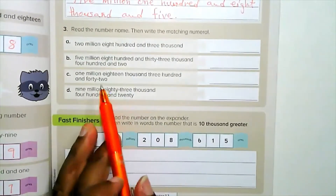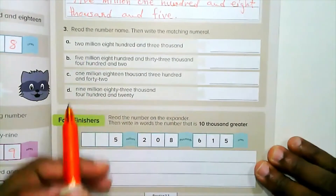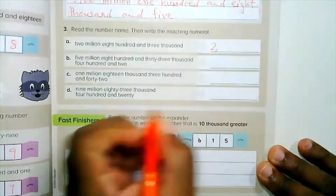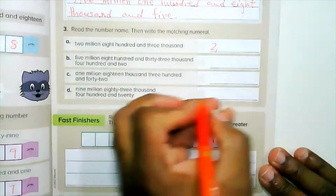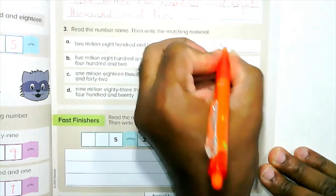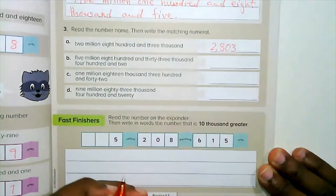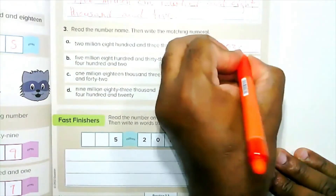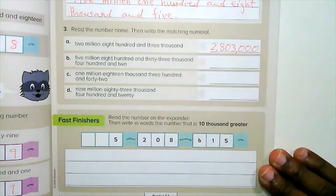Now let's go to number 3. Read the number name, then write the matching number. 2,000,000. So we'll write 2. Then 803,000. There is no 10,000, so we'll write zero. Then there is no 100, no 10s, and no 1s. There you have it, folks.